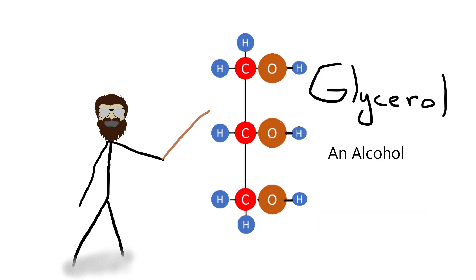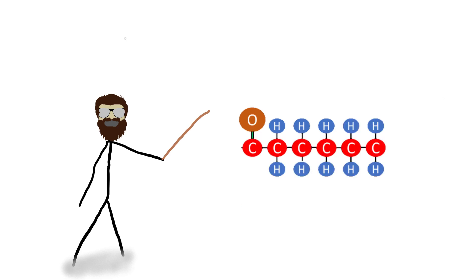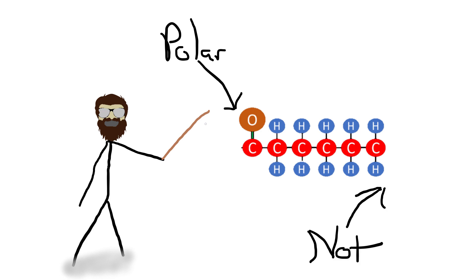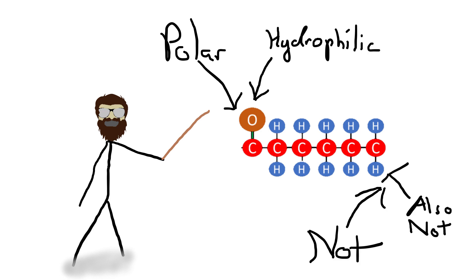These fatty acid salts would then be a detergent, meaning they have a polar and a non-polar end — a hydrophobic and a hydrophilic end. Check out the detergent video for more information about how this works.